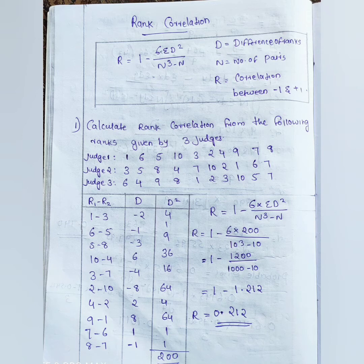Now let's look at the first question: calculate the rank correlation from the following ranks given by three judges. We take the first judge rank R1, second judge rank R2, and third judge rank R3. We will compute the correlation between R1 and R2, R2 and R3, and R1 and R3.